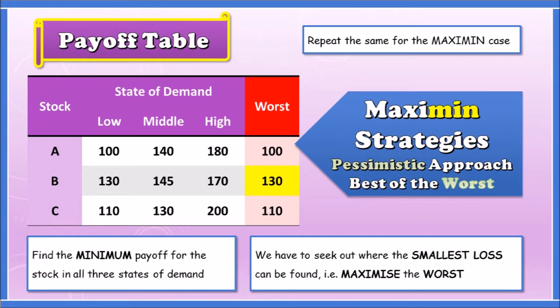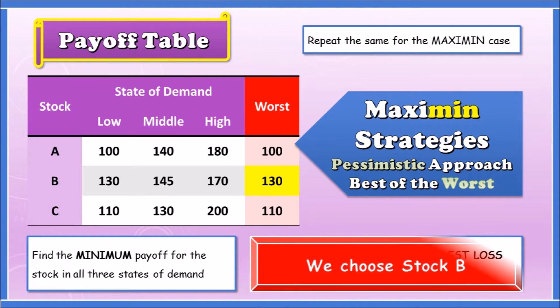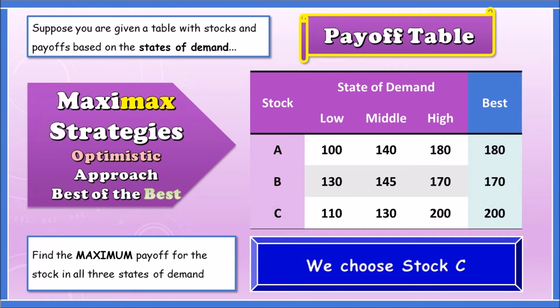The largest value under the worst case is 130, so for any investor you would pick Stock B at 130 — this is the case where you can expect the smallest possible loss. So we select Stock B for the maxi-min. And just to make it clear, for the maxi-max we had to select Stock C because it was 200.